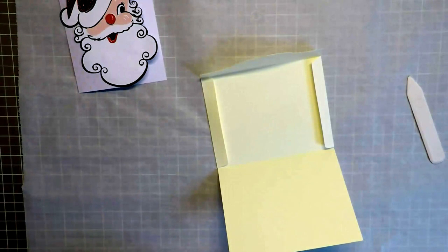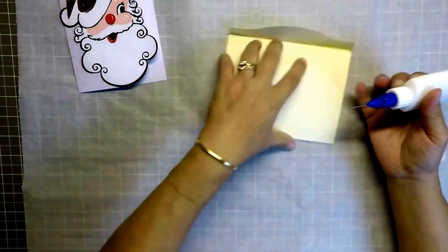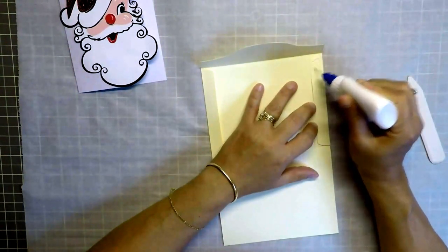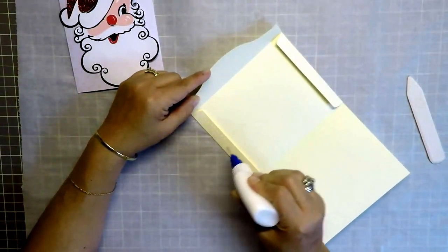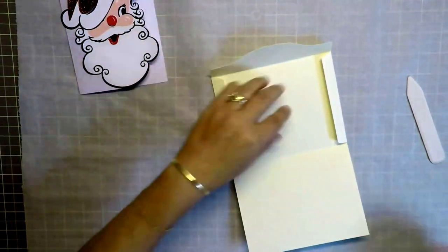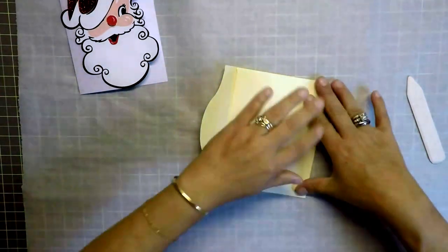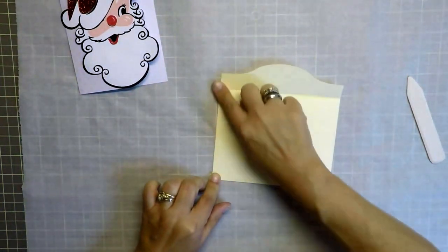Then I'm just going to use some of my liquid glue on the side flaps. And then bring the bottom flap up and adhere it. Just hold it there for a second so that it'll take. And bring the top flap down and my envelope is complete.